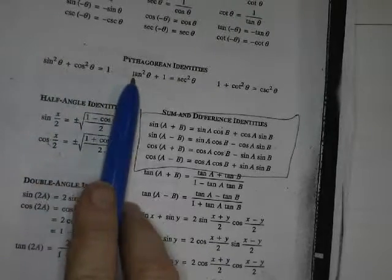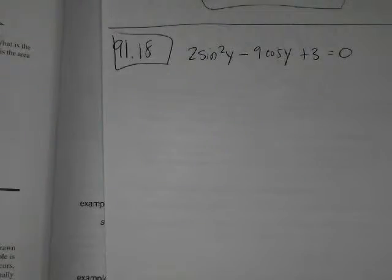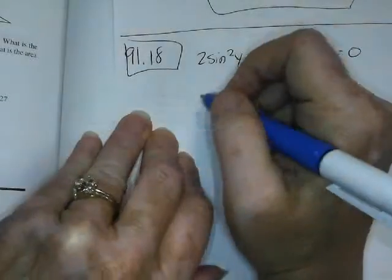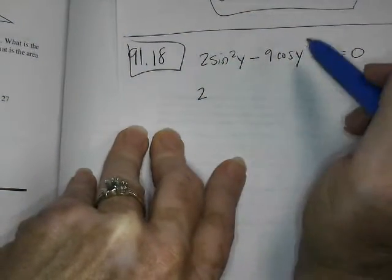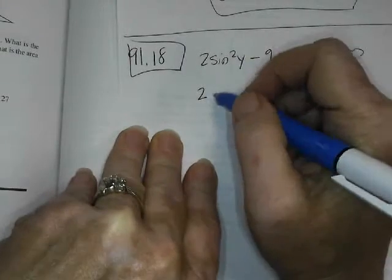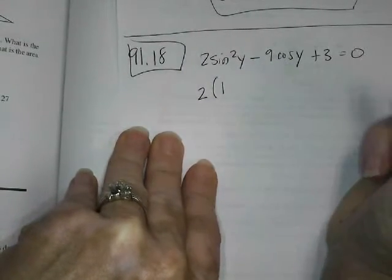See, like 1 minus, if I brought the cosine squared x to the other side, that's sine squared x. Then I'll have all in one, like I won't have sines and cosines together, right? This is 1.